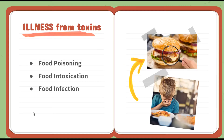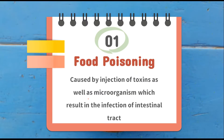Firstly we will discuss about illness from toxins. There are basically three illnesses caused due to microorganisms: food poisoning, food intoxication, and food infection. Food poisoning is caused by ingestion of toxins as well as microorganisms, which results in infection of the intestinal tract in human beings.